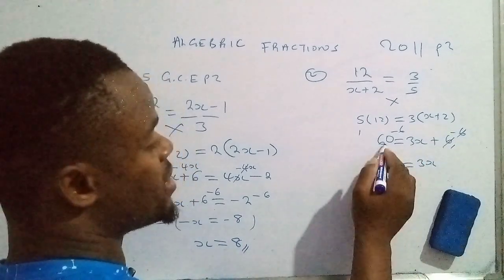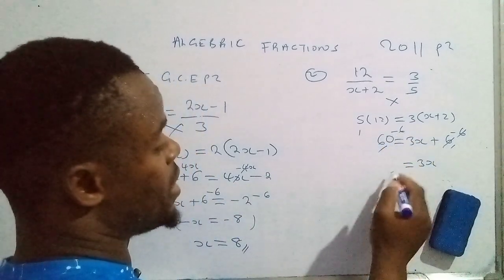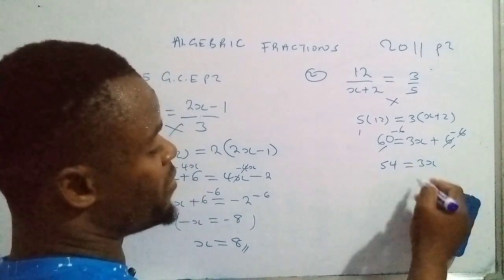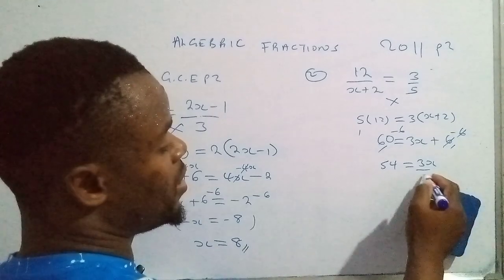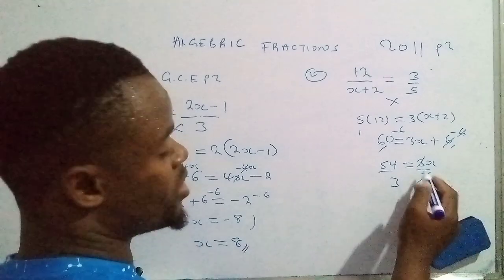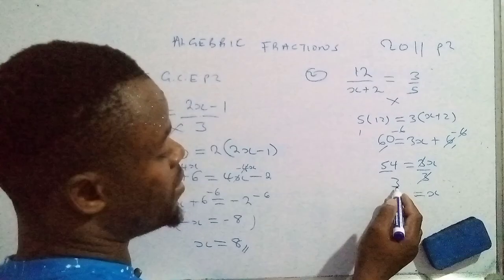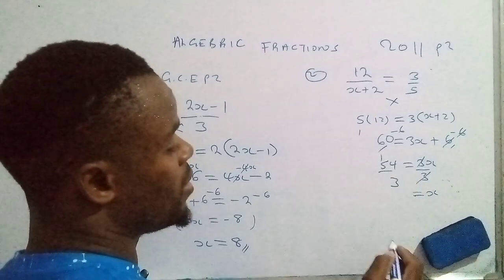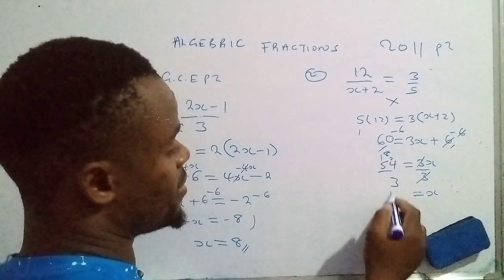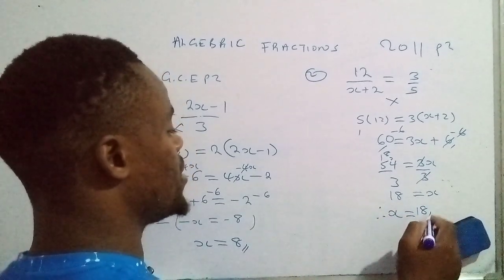60 minus 6, that'll be 54. So our interest is to find the value of x, so we need to divide both sides of the equation by 3. That's 1, 1 into 1, 1 times x, that will give us x. Then 3 into 5, that's 1. 3 into 24, that's 8. Therefore, x is actually 18.